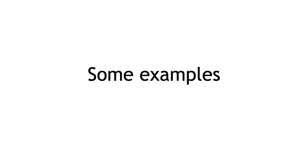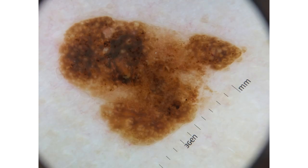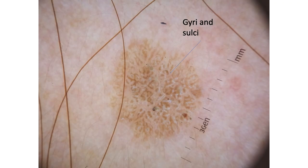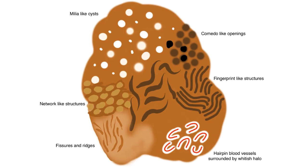Let's see some examples. These photos with non-polarized light show the comedone-like openings, milia-like cysts, and sharply demarcated borders. With polarized light, the milia-like cysts tend to look fainter or less clear. In another example, we have gyri and sulci, and as mentioned, the combination of both is the cerebriform appearance or cerebriform pattern. This slide provides a summary of all the structures of seborrheic keratosis.